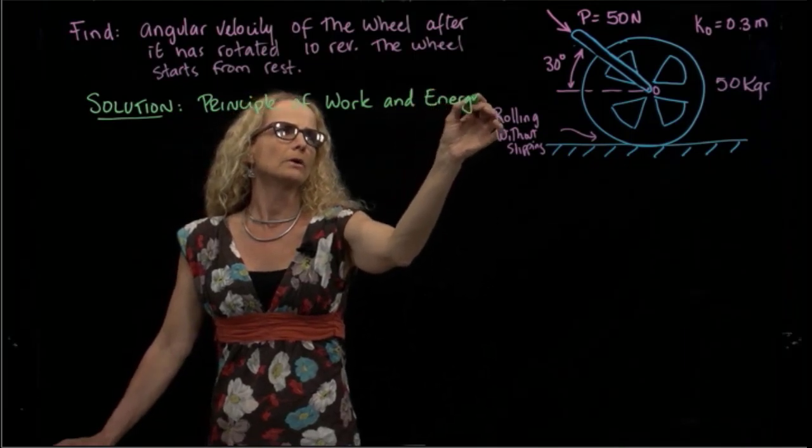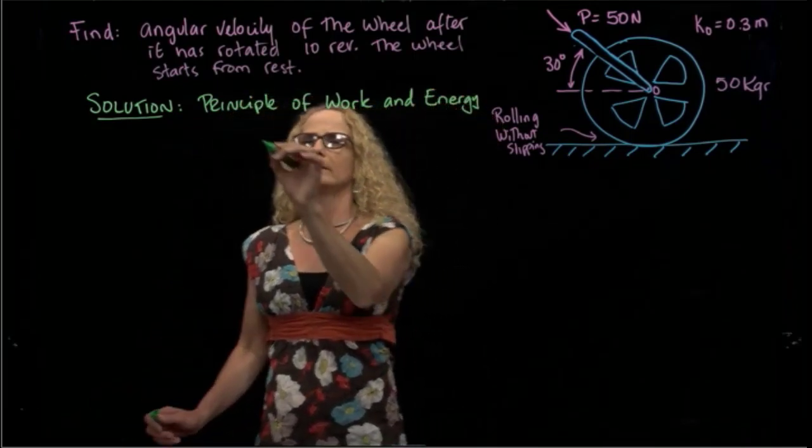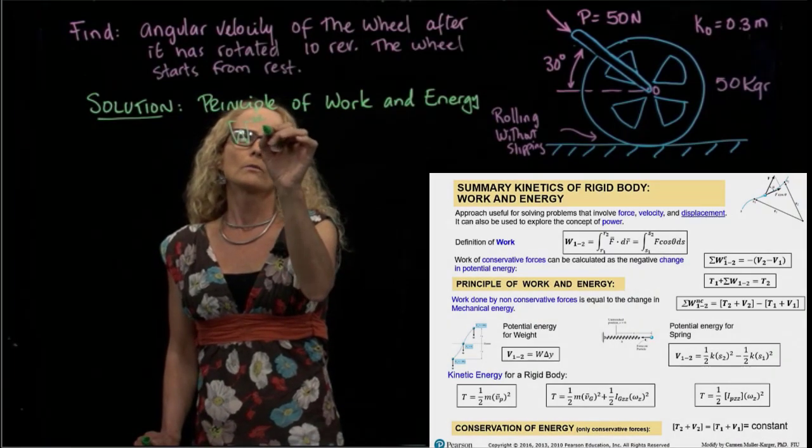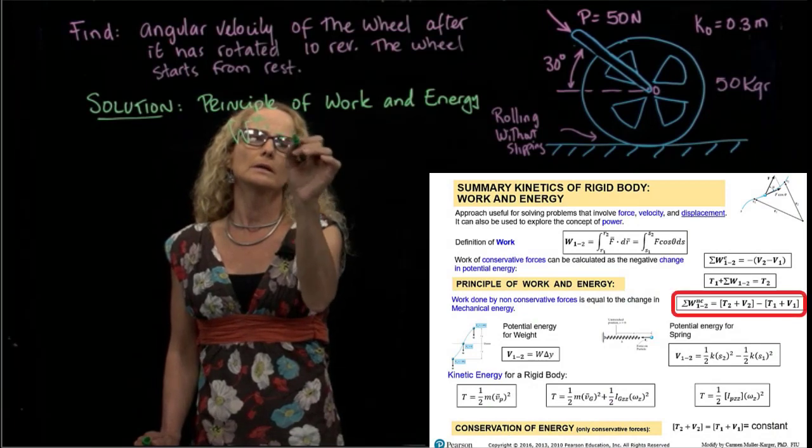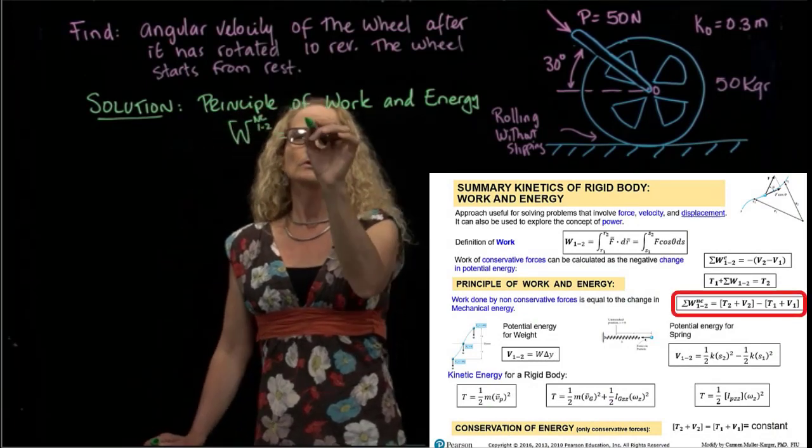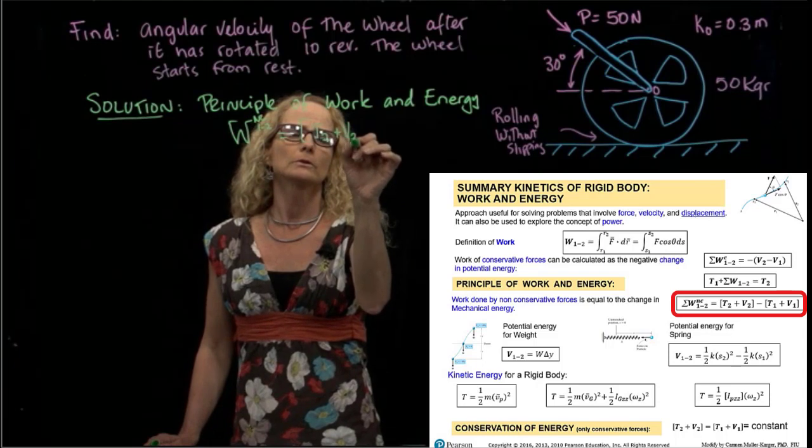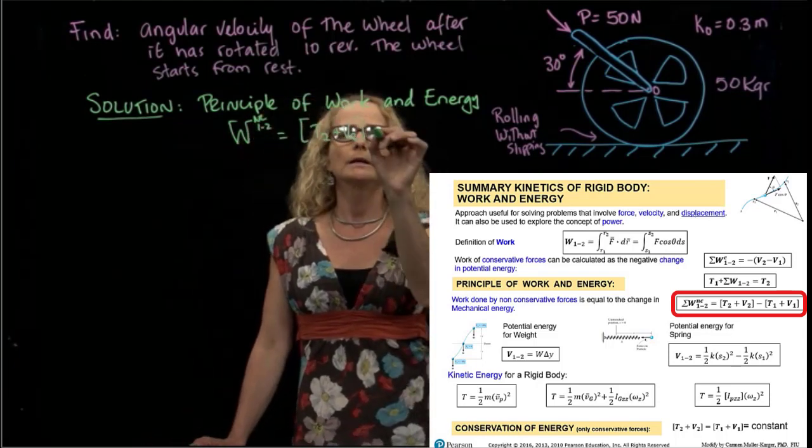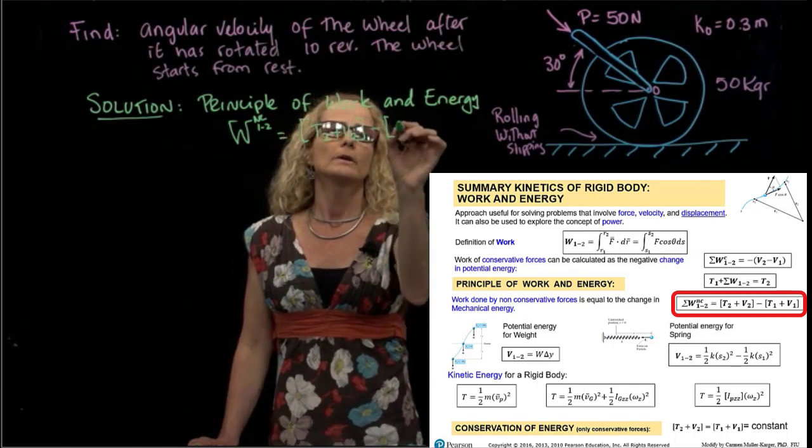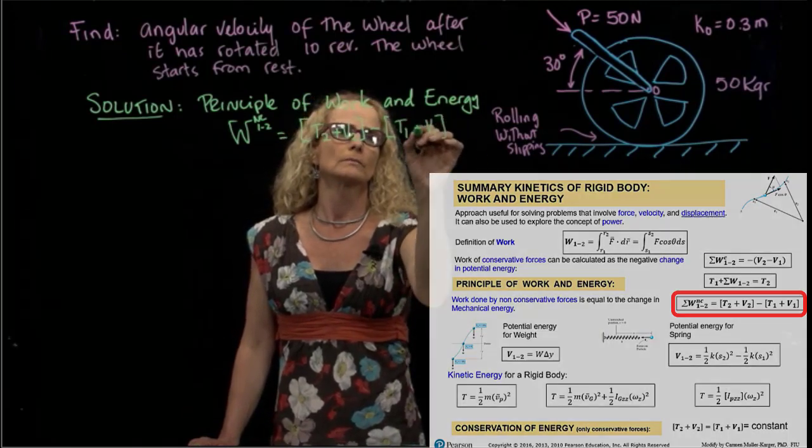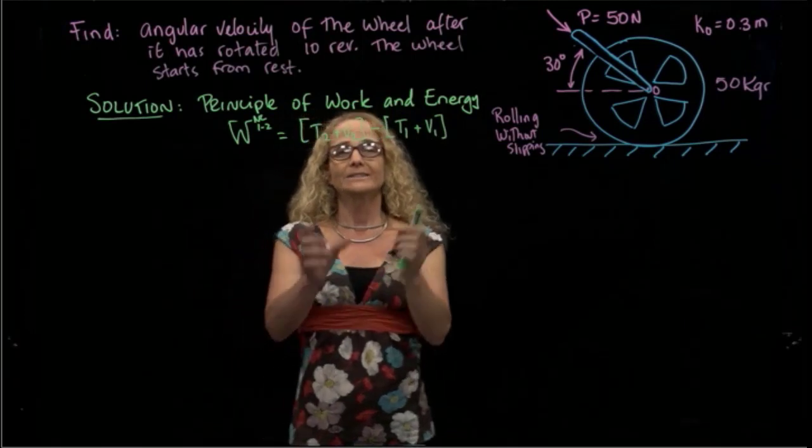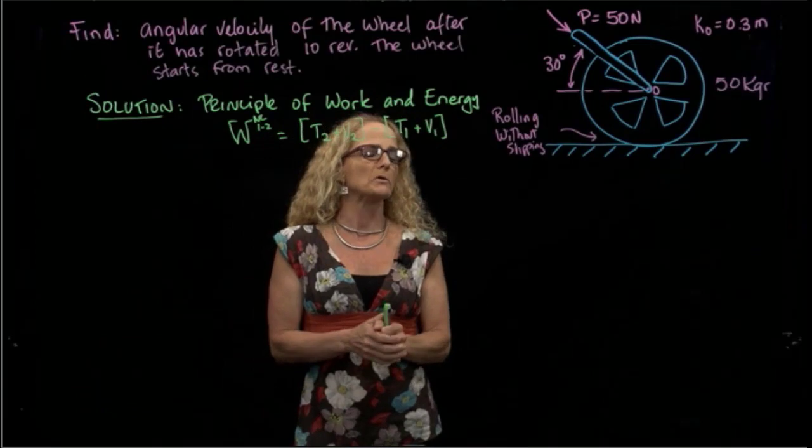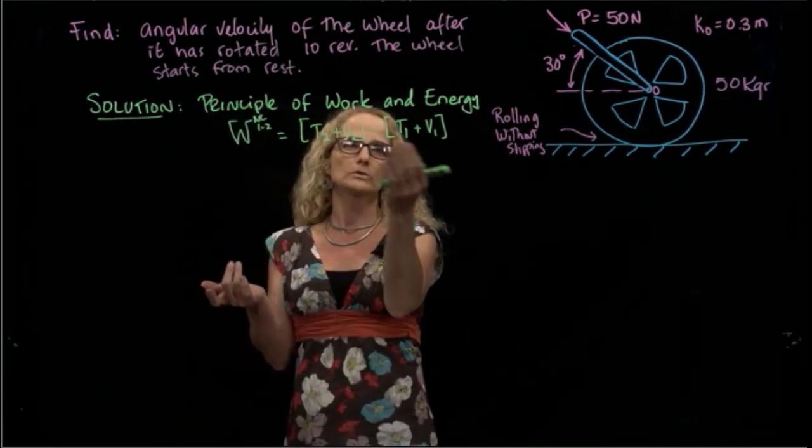And as you recall, there are several ways to write it. The way I like to write it is that the work done by non-conservative forces from 1 to 2 is equal to the total energy in the second position. That means the kinetic energy plus the potential energy minus the total energy in the first position. So the change in energy will be equal to the work done by the applied forces. So we have to calculate each of those terms.